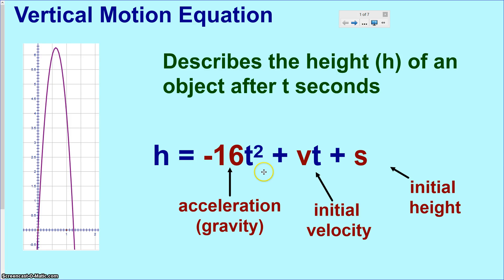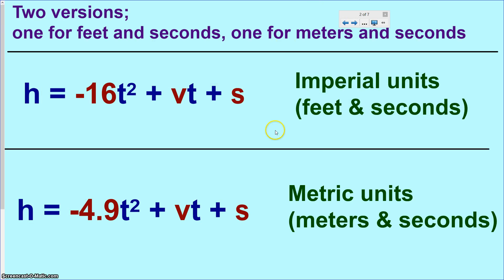h depends on a certain time t in the equation, so that will change. The other two values you have to insert are an initial velocity — the starting velocity of an object — and the initial height of an object. So if it was launched off a balcony not at ground level, you insert that there. There are two versions: one for imperial units (feet and seconds) using negative 16, and one for metric units (meters and seconds) using negative 4.9. Everything else is the same.